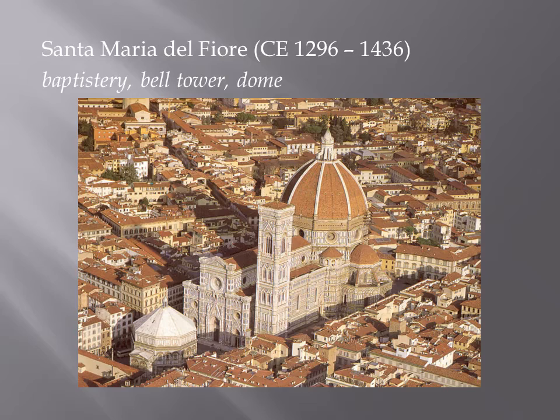Notice how much space the dome takes relative to the rest of the cathedral, and how high it becomes. Again, this was a point of civic pride. The people of Florence really wanted a good dome on their cathedral. The original architect wanted to have a dome but was not able to engineer it, because the weight of domes and the materials they're made of sometimes caused domes to collapse.